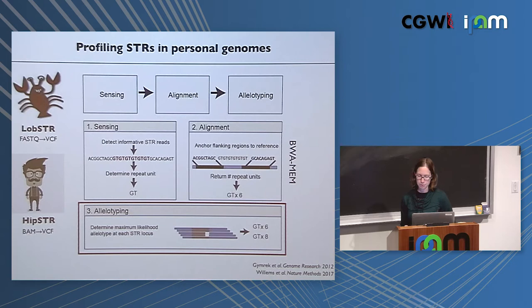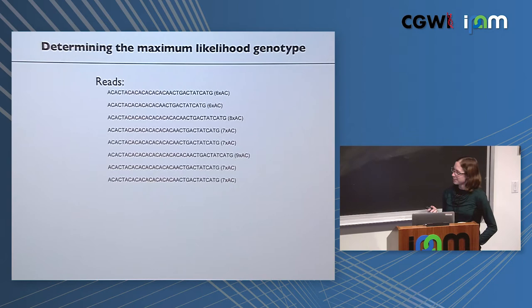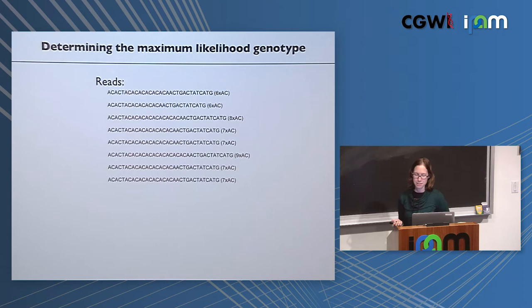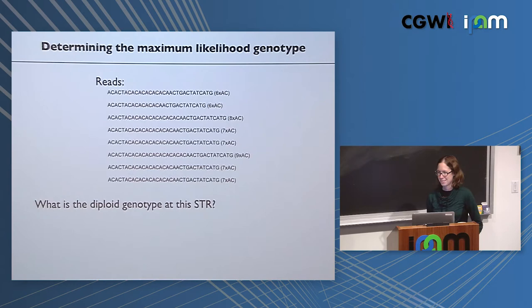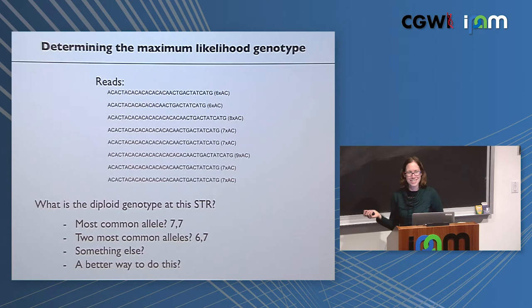Now, interactive mode. We want to determine the maximum likelihood genotype given all reads at a locus. Here's an example of reads at a locus with repeat counts observed. What would you guess the diploid genotype is? Responses suggested seven-seven homozygous, or maybe six-seven because of a couple of counts of six. Is there a better way than eyeballing? Let's turn this into a likelihood problem and find the maximum likelihood genotype.